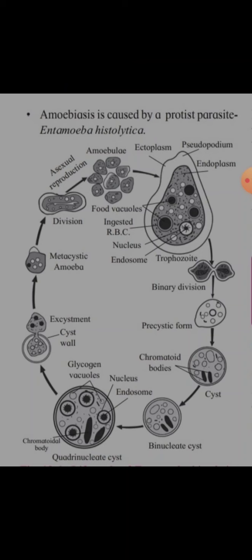The precystic forms will develop a cyst around them, and inside, chromatoid bodies are present. This cyst will develop into a binucleated cyst, that is, two nuclei will be present. This binucleated cyst will then develop into a quadrinucleated cyst with four nuclei. Glycogen and vacuoles are also present.